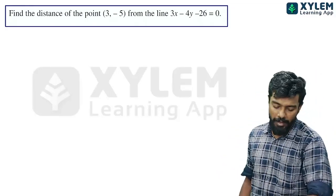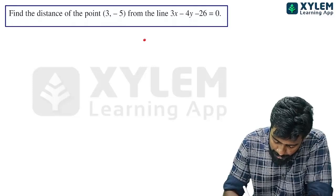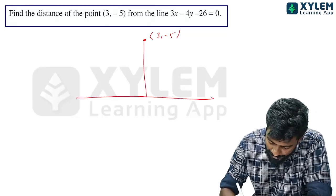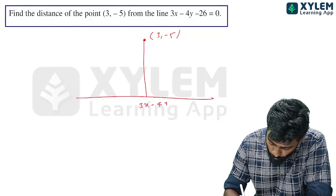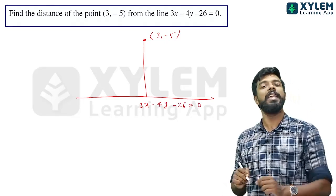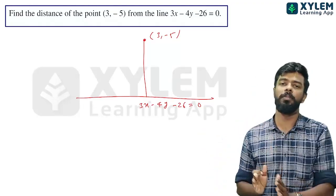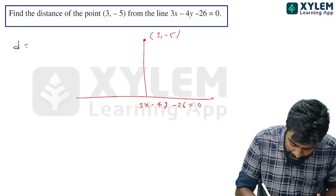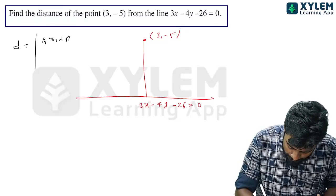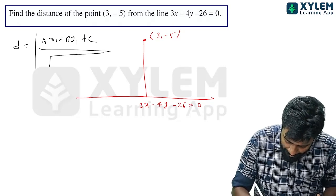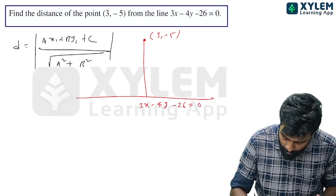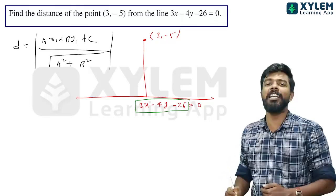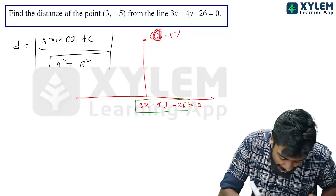Find the distance from the point (3, -1) to the line 3x minus 4y minus 26 equal to 0. Apply the formula: d equals modulus of a·x₁ plus b·y₁ plus c divided by root of a² plus b². The x-coefficient is 3 and x-coordinate is 3.